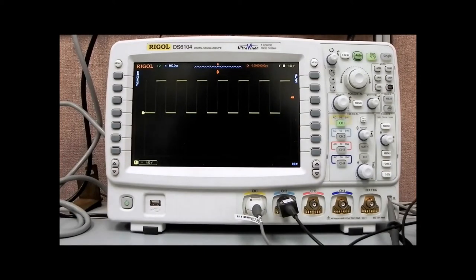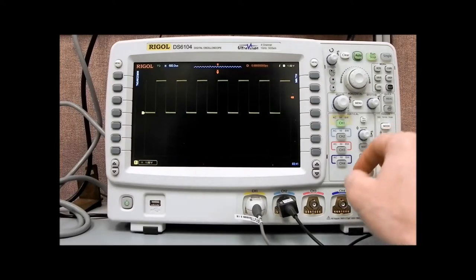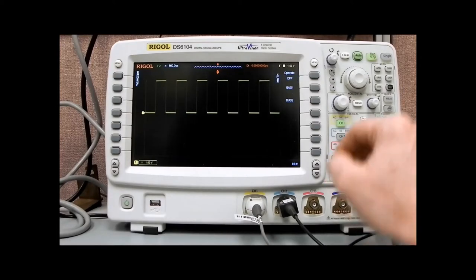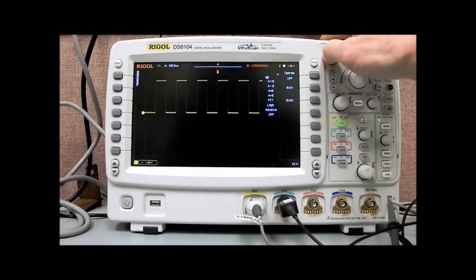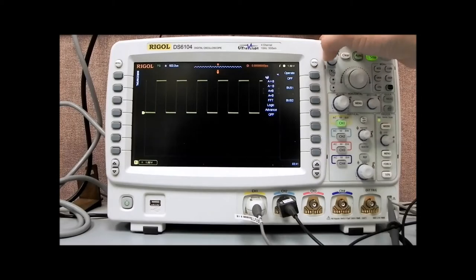Now with the DS6000, I'd like to take a closer look at some of the math functions that we have available. Let's slide out the math menu and we can start describing some of these. Very common to most scopes, we have A plus B, A minus B, A times B, A divided by B.